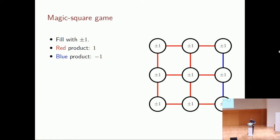An example of such a game is the magic square game, where you have a three-by-three grid to fill with plus or minus ones. The rules are that any red line — for example the top row — must have a product of one, while a blue line must have a product of minus one. It is straightforward to see that there is no way to fill the grid with just plus and minus ones satisfying all conditions simultaneously.